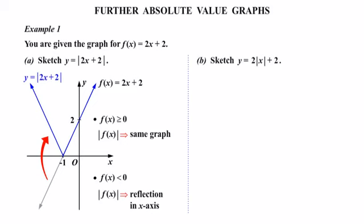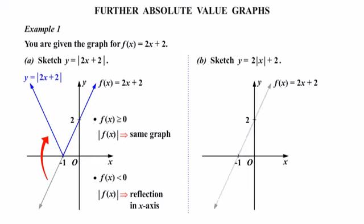Here we're asked to sketch y = 2|x| + 2. Note that in this one we're just taking the absolute value of x, not the whole function. We've got the same starting graph, but there will be a couple of different conditions here.